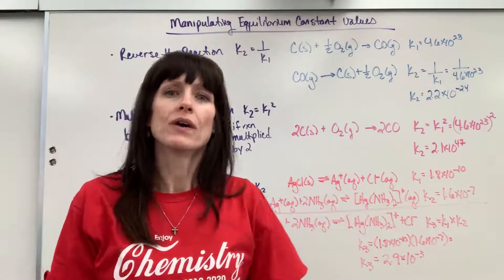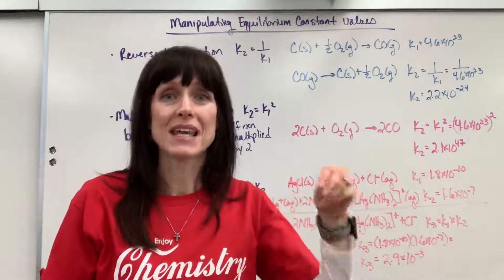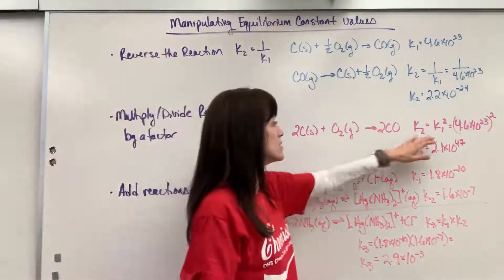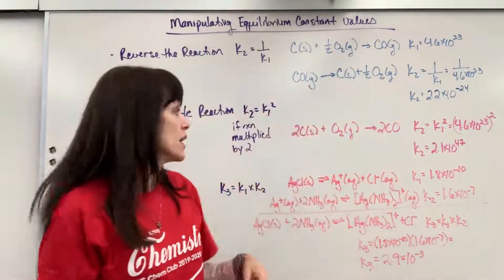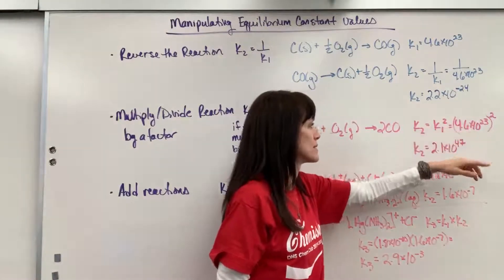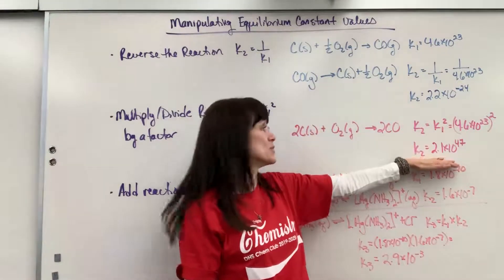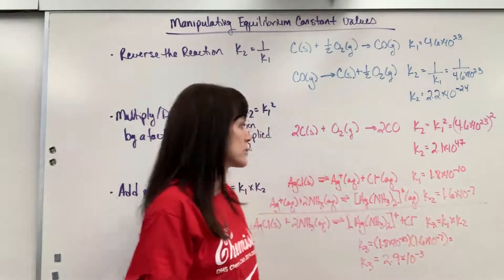So rule of thumb on that, whatever factor you use, whether you're multiplying or dividing, it becomes the exponent. You take the original equilibrium expression and raise it to that factor. So if I take the k1 squared, 4.6 times 10 to the 23, this is going to be 2.1 times 10 to the 47 for its new equilibrium expression.